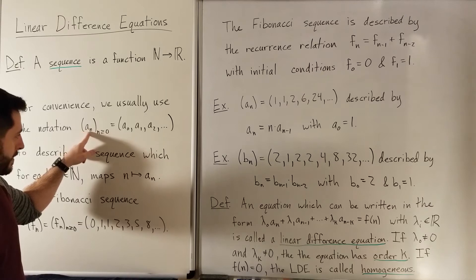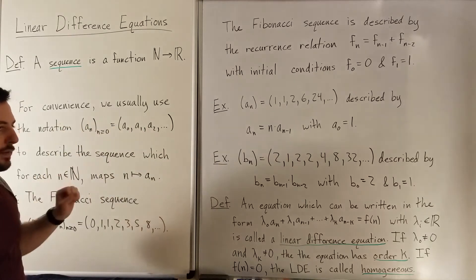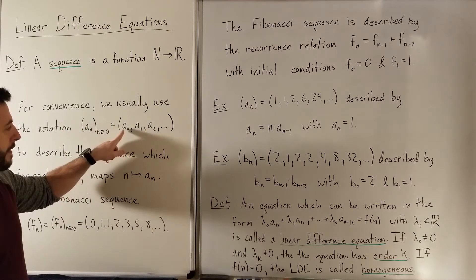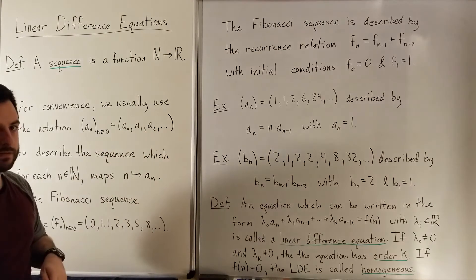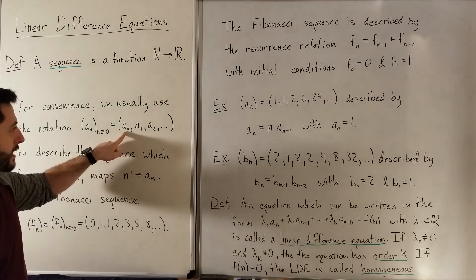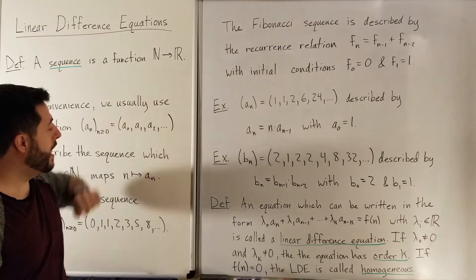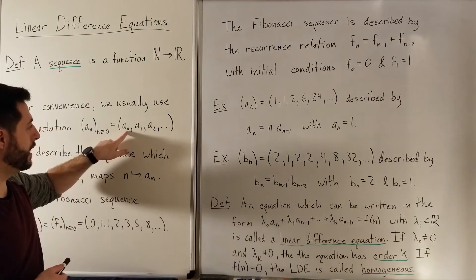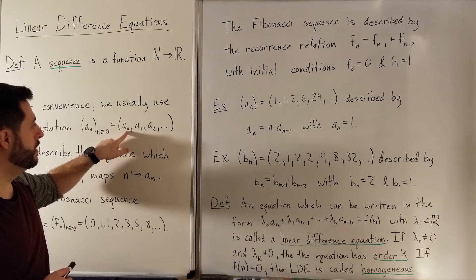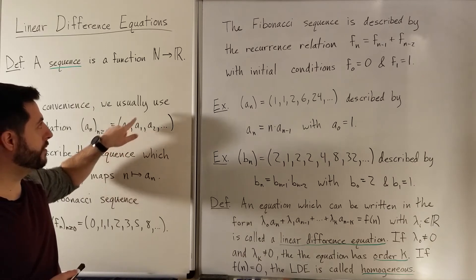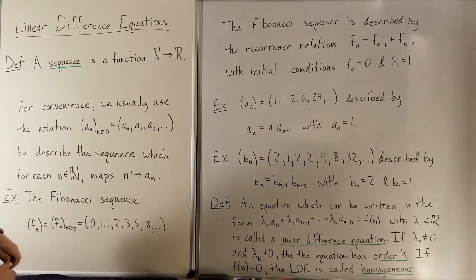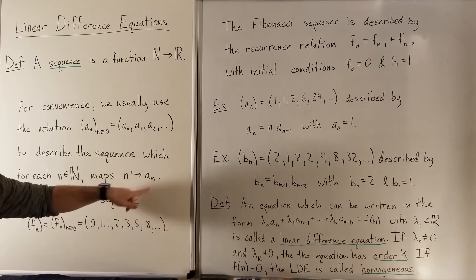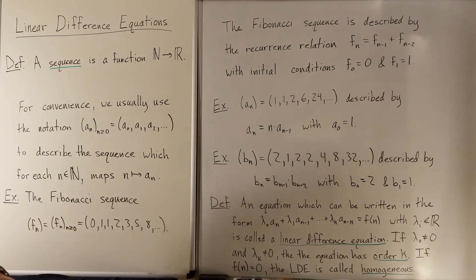The name of the sequence is a_sub_n, or a_sub_n with parentheses. These are the numbers in the sequence — in other words, this is what happens when you plug in 0 into this function. So a_sub_0 is a real number; that's the output from plugging in the number 0. The sequence maps n to a_sub_n for each of these values n.